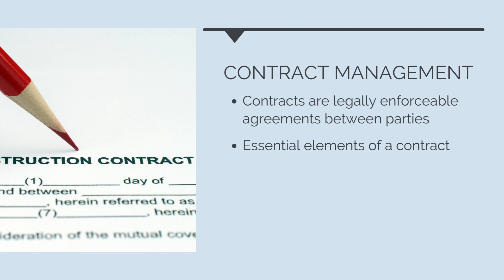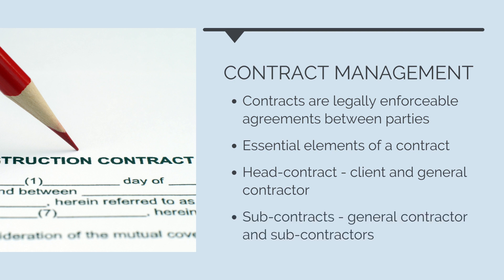To effectively use construction contracts, we need to understand the essential elements of a contract. The two key types of contracts we deal with are the head contract, which is the contract between the client and the general contractor, and subcontracts, the contracts between us and our supply chain.